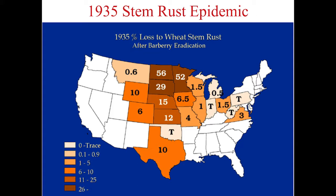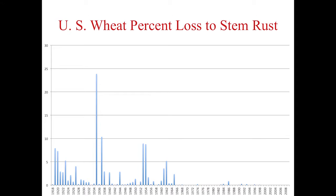UG99 has been particularly bad because it's been changing over time. SR36 was actually effective at first, but then a new isolate of UG99 overcame SR36. Similarly, there are isolates of UG99 that overcome TTKST. That's why it's a race complex — it's not just one race, but multiple races causing this epidemic.